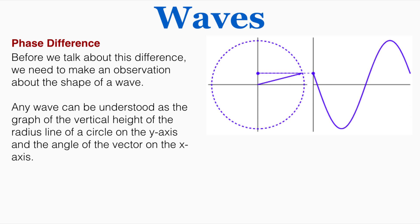Any wave graph can be understood as the graph of the vertical height of the radius line of a circle on the y-axis and the angle of the vector on the x-axis. So as this circle goes around, you'll notice that if we track just the vertical height of that radius line as it goes around a circle, that produces a wave. So all waves actually share this property where they can be understood as the vertical height of that radius line on the y-axis and the degree of the circle on the x-axis.